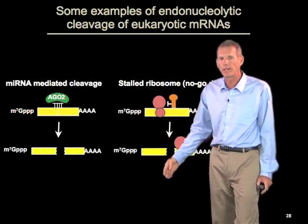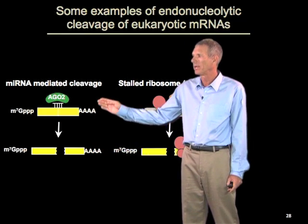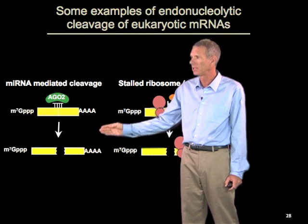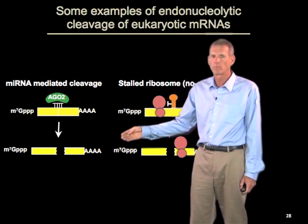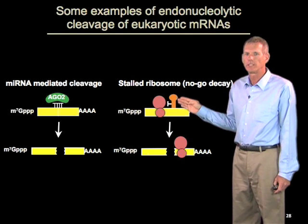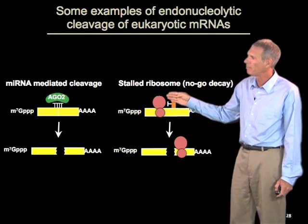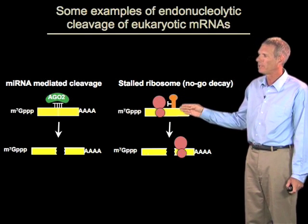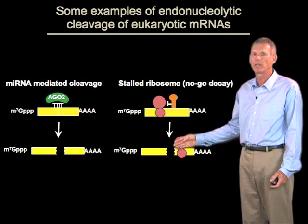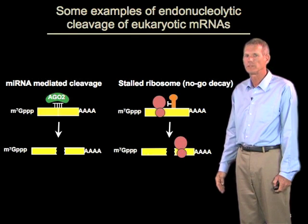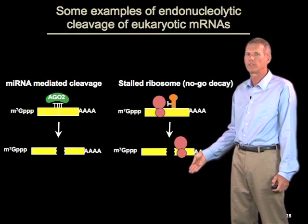Two examples of endonuclease cleavage worth highlighting: one is where microRNAs can trigger cleavage of mRNAs, described in a variety of eukaryotic cells, most prevalently in plants but also observed in mammalian cells. Another class is yet another quality control system where, when ribosomes translating down a message get stuck in elongation for any reason, that triggers cleavage of the mRNA to rescue the dead-end complex and degradation of the two pieces. An unresolved area is how diverse these types of endonuclease cleavages are in eukaryotic cells, and how common these distinct classes are.